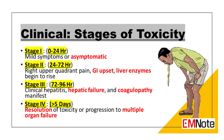Stage 2, 24 to 72 hours: GI upset, vomiting, and right upper quadrant abdominal pain are common. Liver function tests such as AST and ALT begin to rise. INR is usually normal but sometimes elevated.